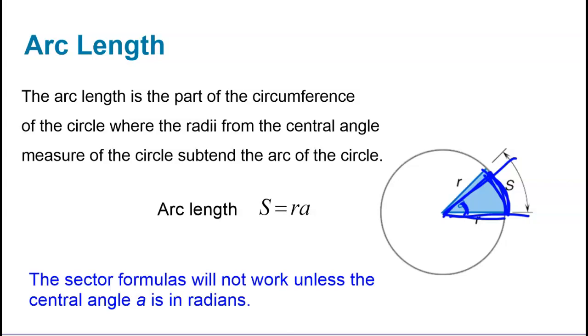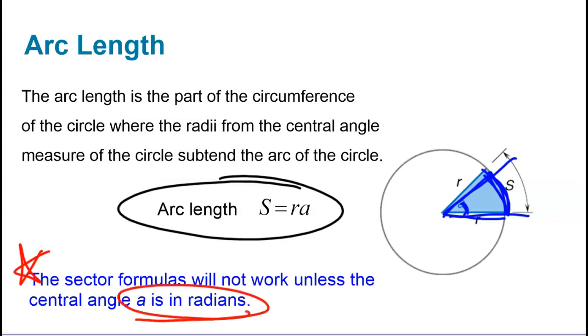And so to be able to find that, we will use this formula right here, and I will again encourage you to write this formula down onto a note card. Use this for the test and use this for the final exam. Understand that arc length is big S, and it equals the radius times the central angle. And one of the big things is that this formula will not work unless the central angle is in radians. So make sure that you convert to radians before you do any problems looking for arc length.